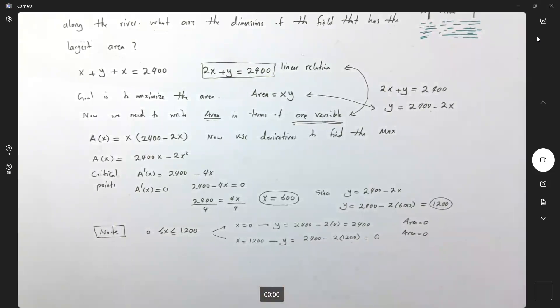So it means that here we cannot use the lower limit and upper limit for x because it gives us area zero. The best value is x equals to 600 and y is 1,200. It gives us the maximum area.